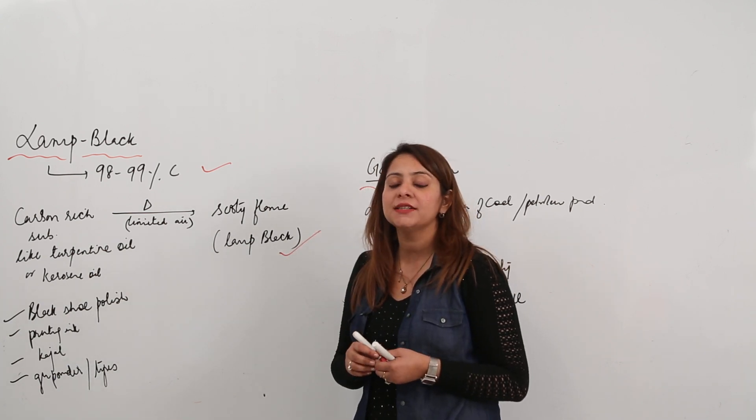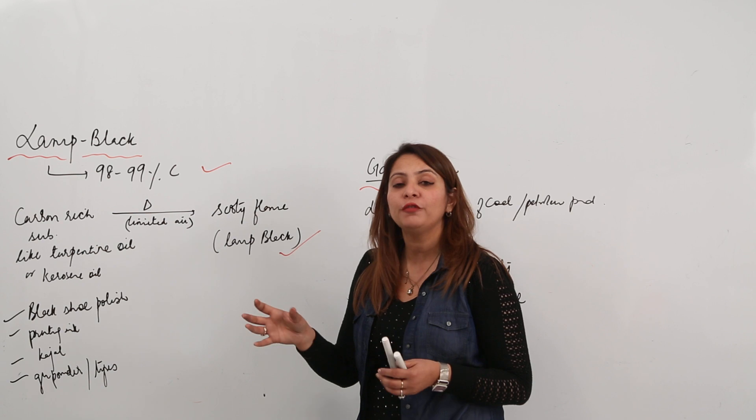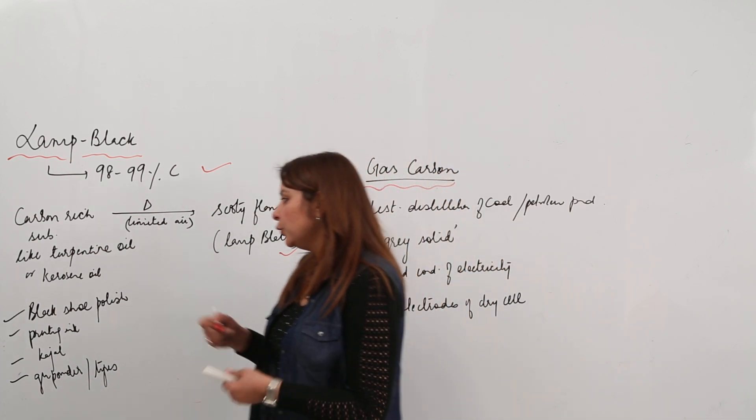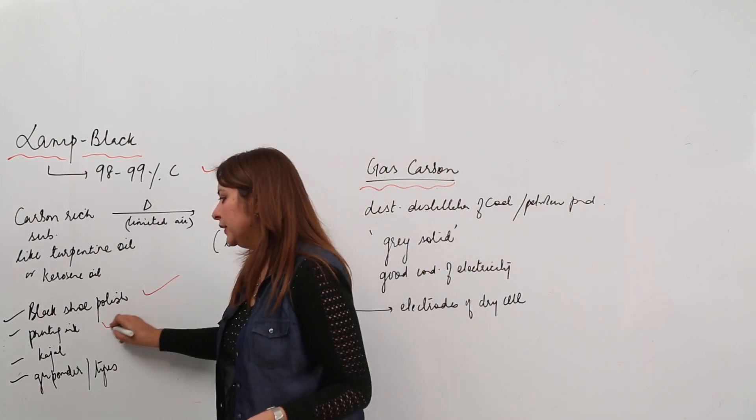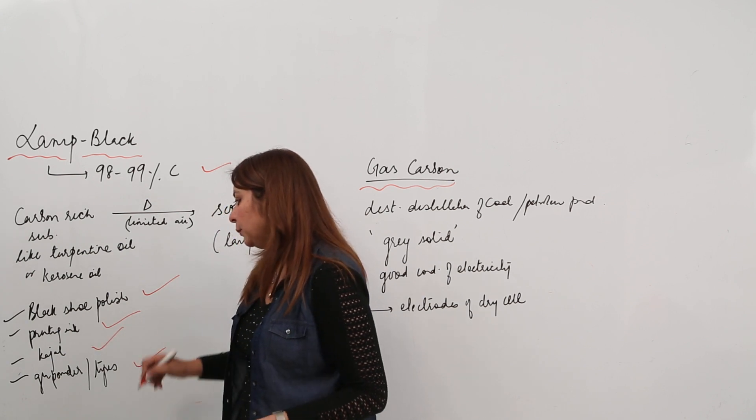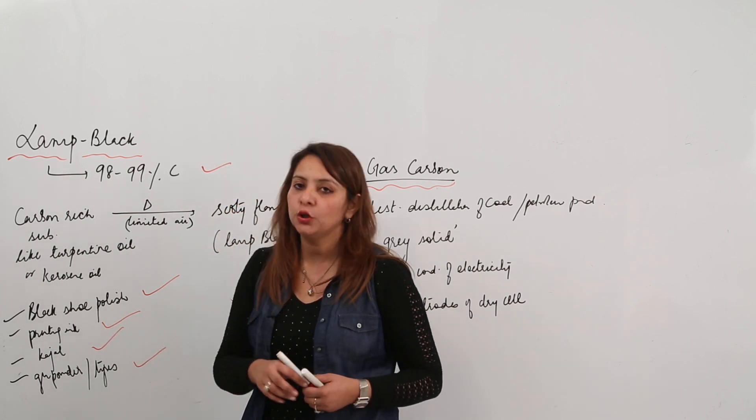Lamp black is mainly used in India as kajal or as a constituent of eyeliners. It is used in making black shoe polish, printing ink, kajal, eyeliners, gunpowder, and also in the making of tires.